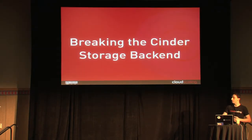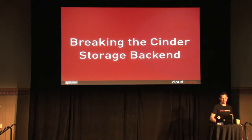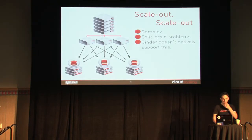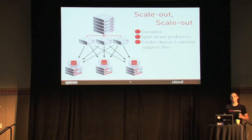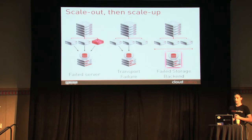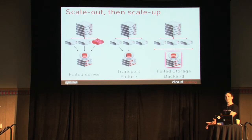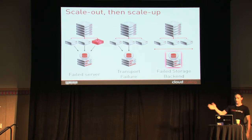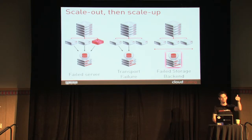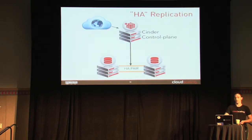To fix this, we're going to talk a little more about the storage backend and show how it fails and breaks. The multi-backend pattern was really a scale-out, then scale-up pattern, because even if you scale the control plane, those are still really big backend storage boxes that some vendor provided. So you can get a failed storage backend, transport failures, failed servers, and now your front-end box has to be aware of that. Most people try to fix this through doing HA pairs.